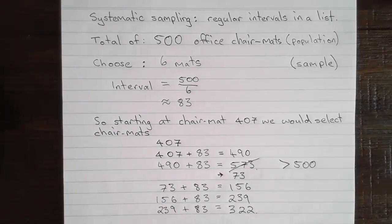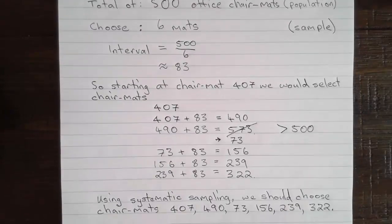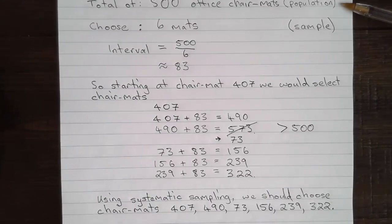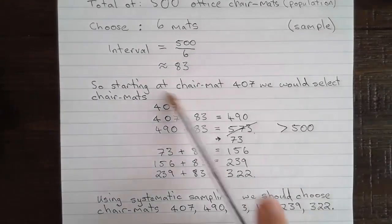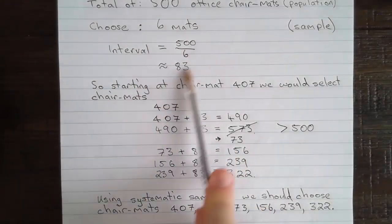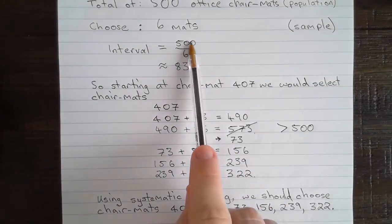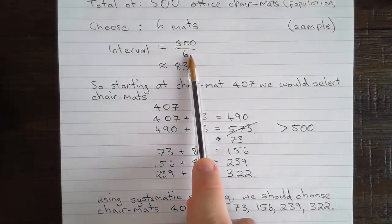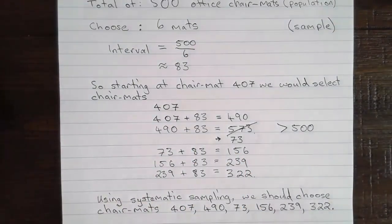To select 6 chair mats out of a total population of 500. Remember that we found the interval that we required to move along the list by dividing the total by the sample size. 500 divided by 6 giving us about 83.